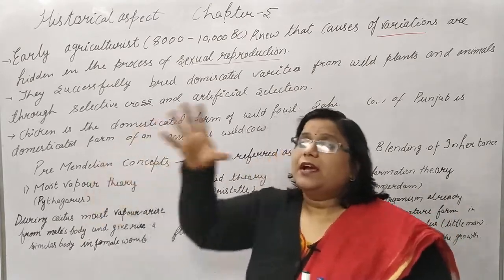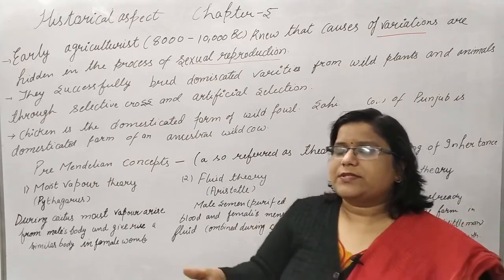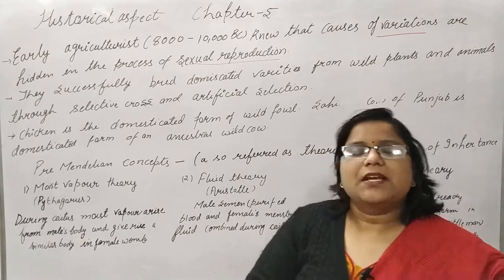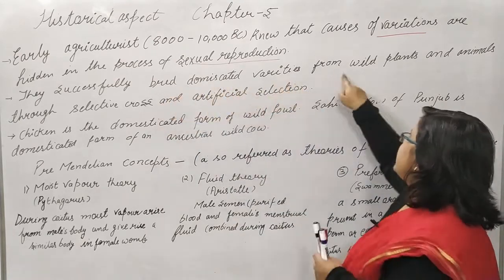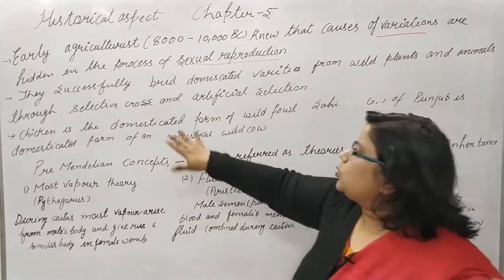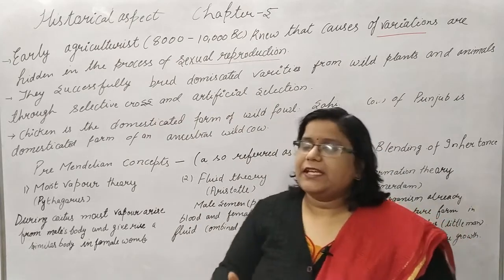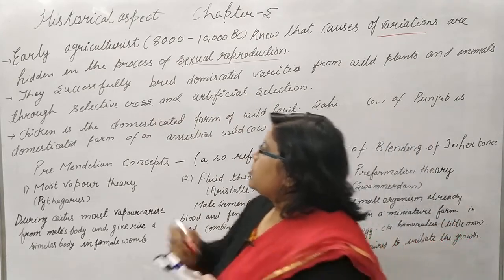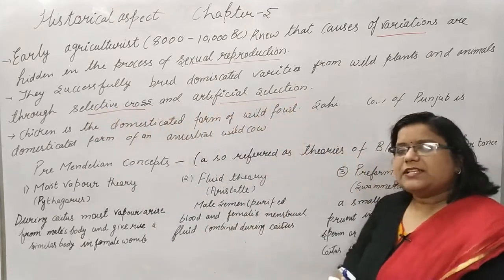They used the selection process in different ways to develop vegetables. They successfully bred domesticated varieties from wild plants and animals through selective cross and artificial selection, developing different varieties in this way.